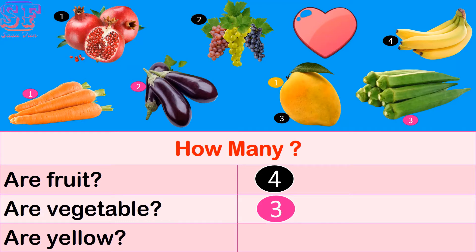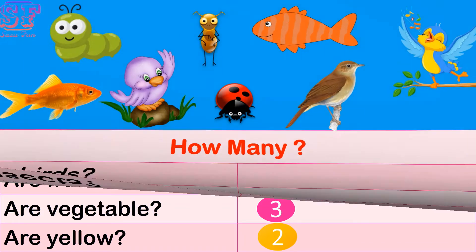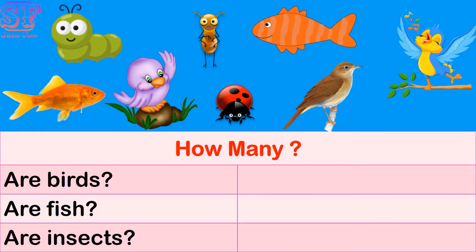One, two, three yellow. How many are yellow? One, two, three, four — four yellow.